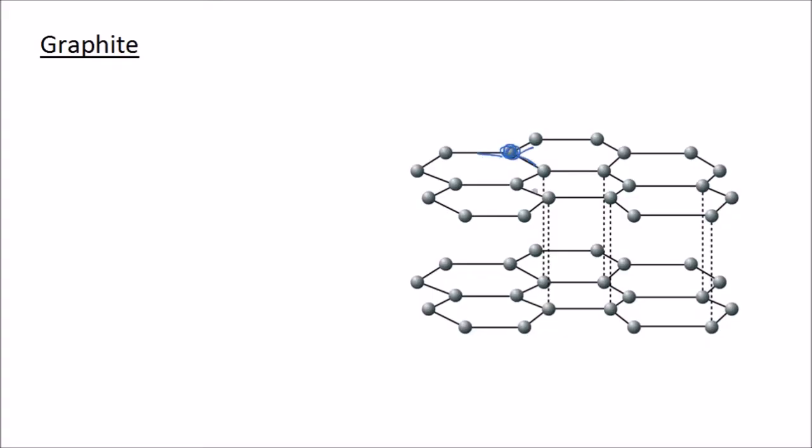we can see that it forms one, two, three covalent bonds with other carbon atoms. Now remember we said that each carbon has four outer electrons and these only make three bonds, which means they each have one spare electron that is unbonded.